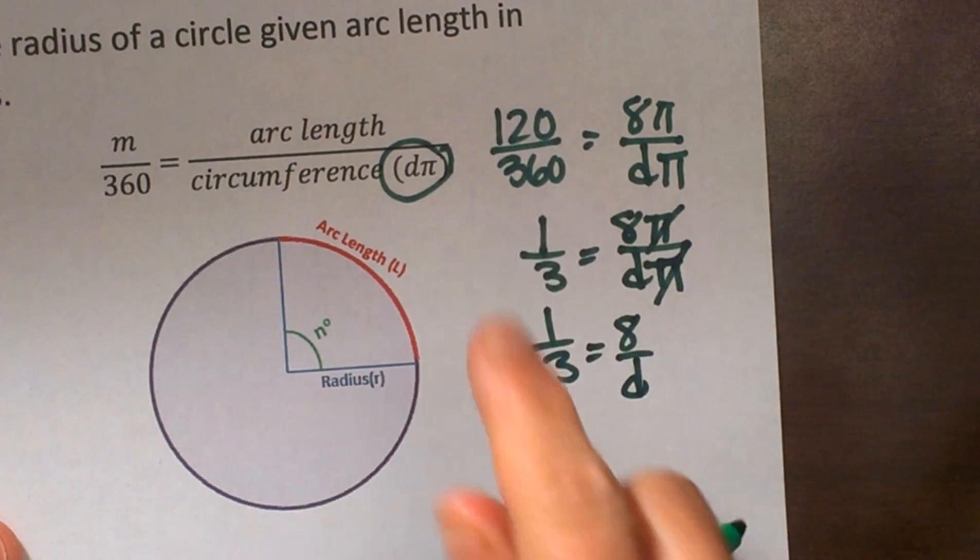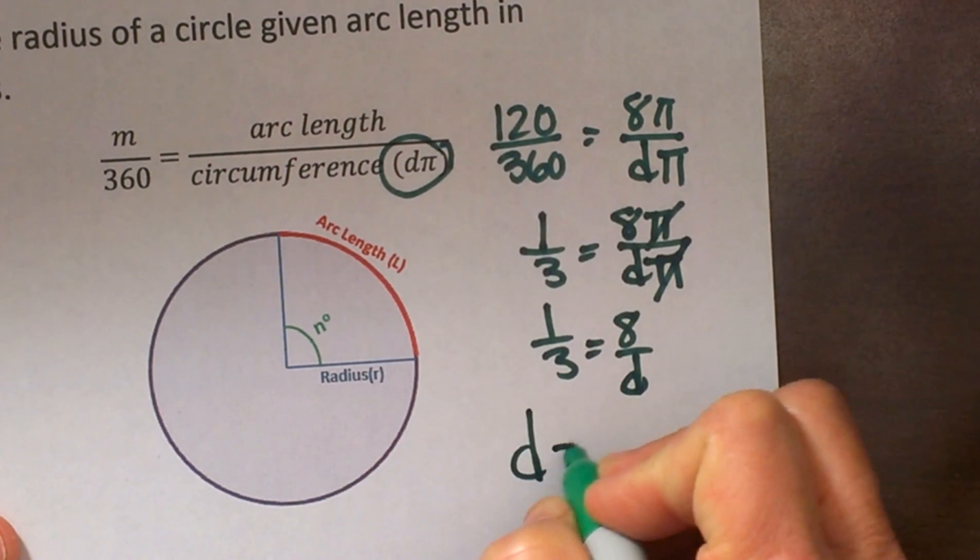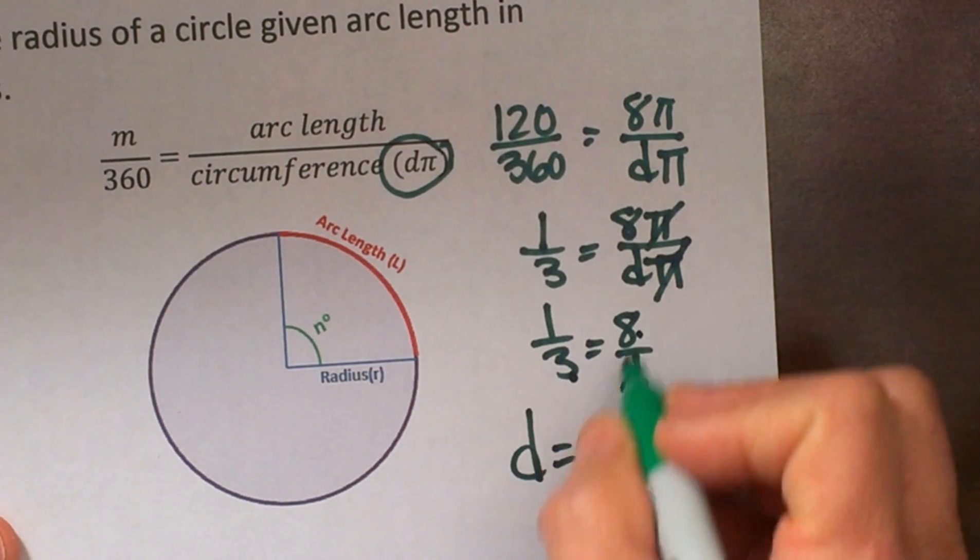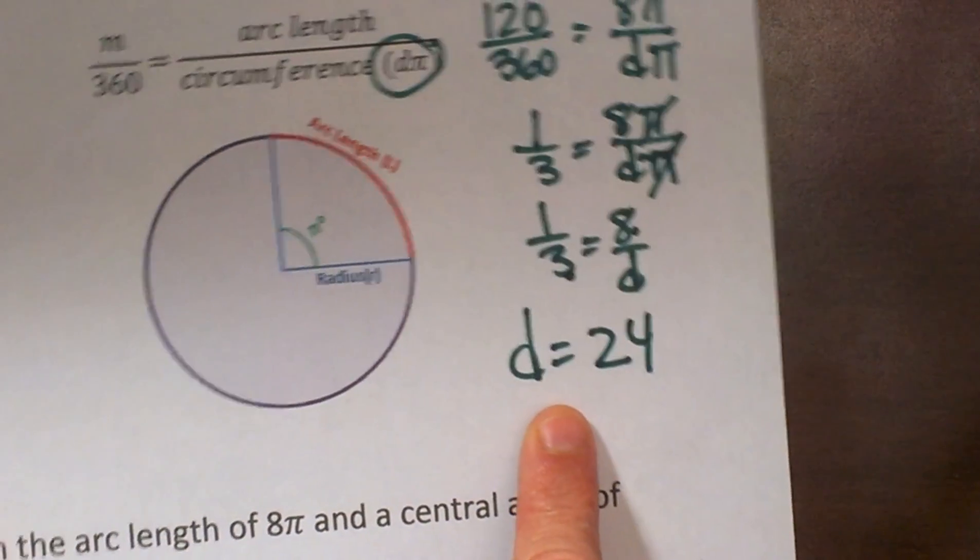Now this is a proportion. Easiest way to solve a proportion is just cross multiply. So 1 times d is 1d or just d. And 3 times 8 is 24.